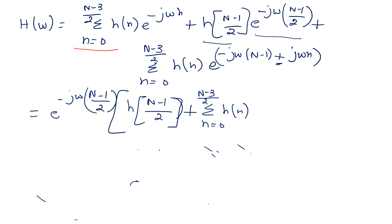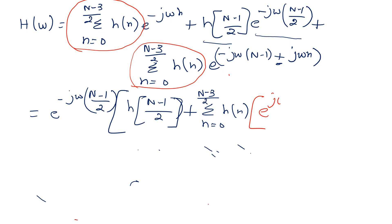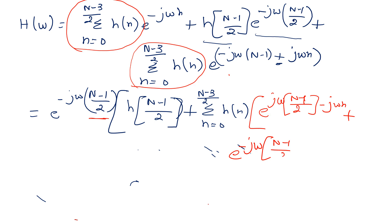I am going to highlight using color. This particular value and the first and last terms are coming out as common, so I am taking it out and writing the remaining terms. The remaining terms inside become e^(jω(N-1)/2 - jωn) plus e^(-jω(N-1)/2 + jωn), since I have taken e^(-jω(N-1)/2) as the common factor.